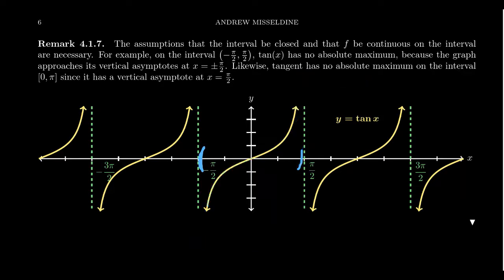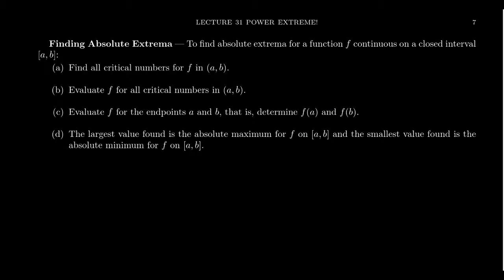We also need continuity. Using the tangent example on the closed interval [0, π]: zero and π are both included in the domain, making it a closed interval. However, there's a discontinuity — a vertical asymptote — at x = π/2. So there's no absolute maximum because we can get arbitrarily close to infinity, and no absolute minimum because we can get arbitrarily close to negative infinity. Both the continuity assumption and the closed interval assumption are necessary to guarantee absolute extrema.